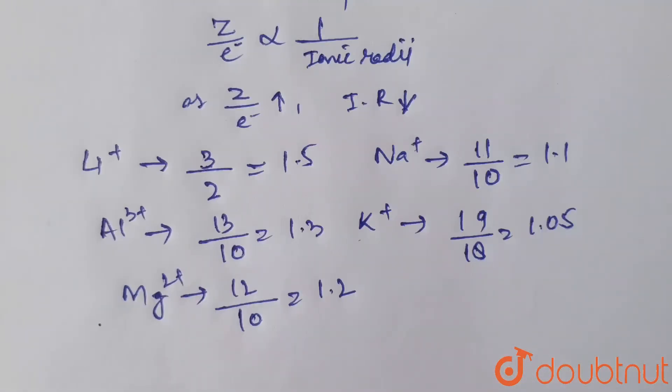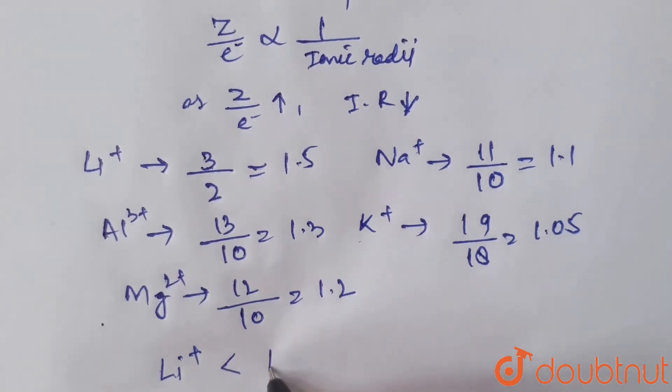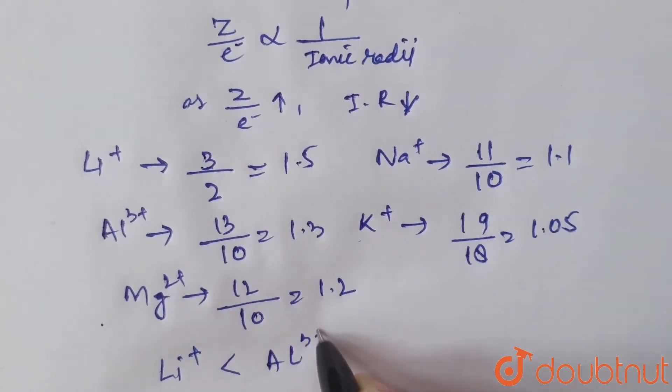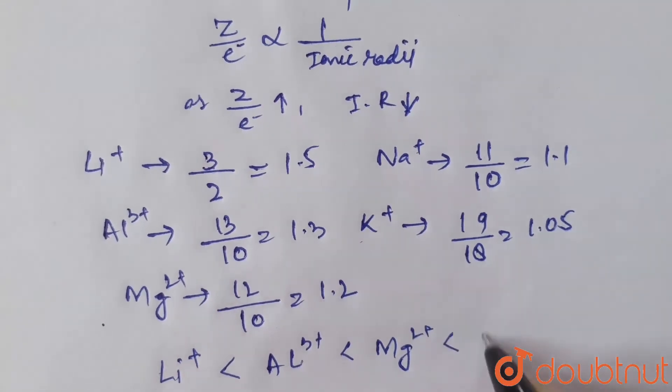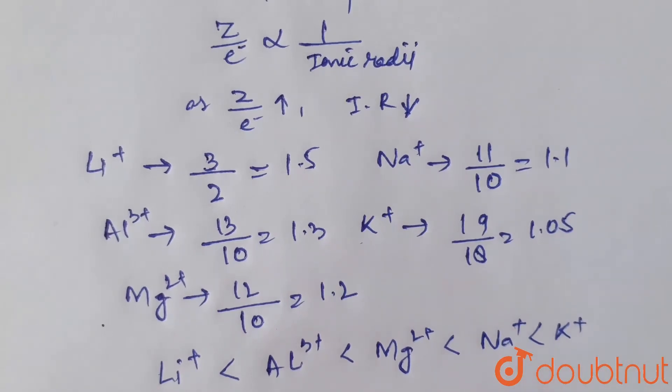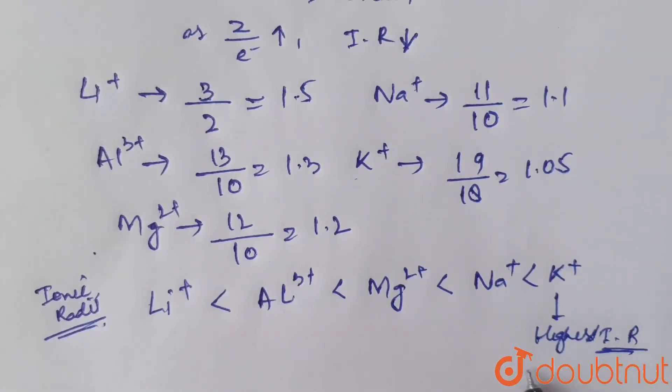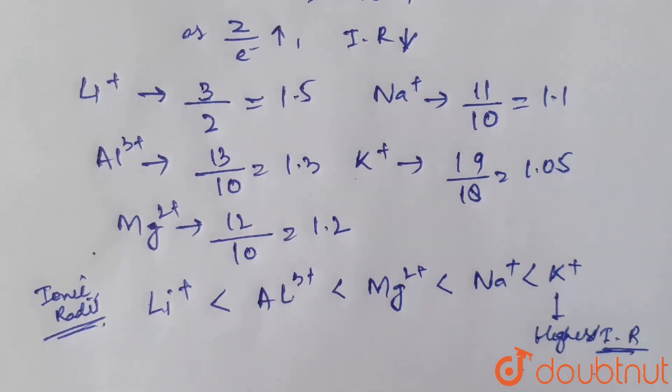Taking the Z by e ratio gives the ionic radii. Now if we arrange in order of increasing ionic radii, we have lithium less than aluminum less than magnesium less than sodium less than potassium. So K+ has highest ionic radii as it has least Z by e ratio among them. Thank you.